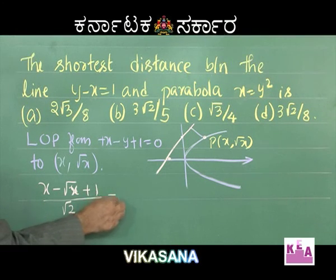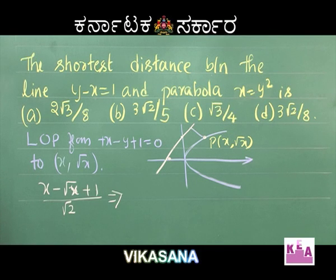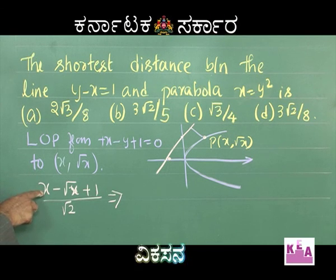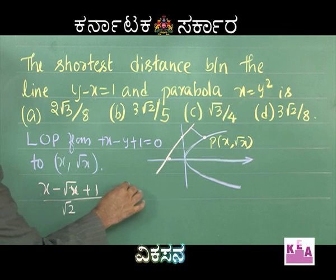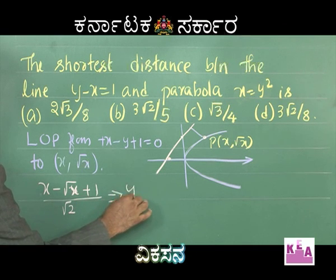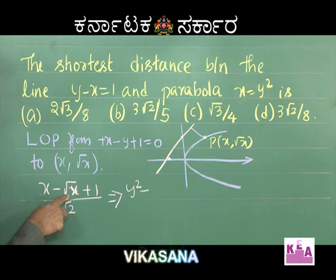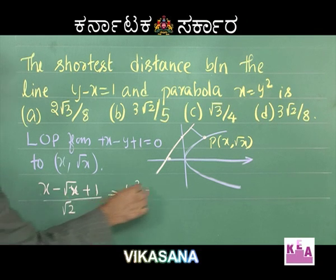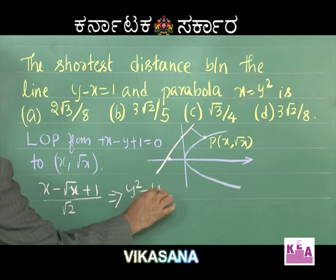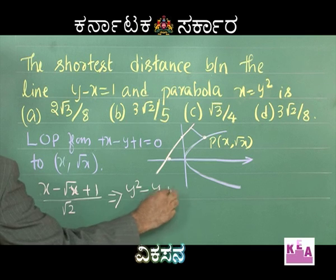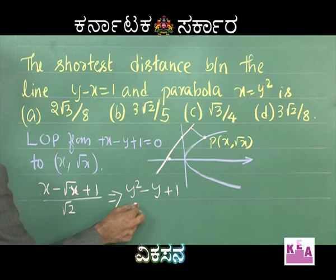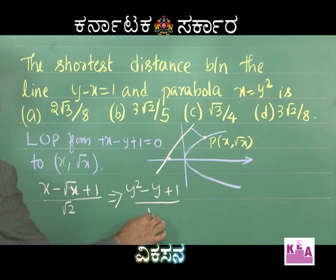In place of √x we can write y, so x = y². This gives us |y² − y + 1| / √2.